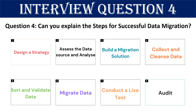Question 4: Can you explain the steps for successful data migration? Step 1: Design a strategy — selecting a data migration strategy depends on the need: is the organization consolidating systems following an acquisition or merger, or is it due to data overload? Step 2: Assess the data source and analyze — before migrating data, you must know what you're migrating and how it fits within the target system. Step 3: Build a migration solution — since data migration is a one-time and large activity, it's crucial to get it right.